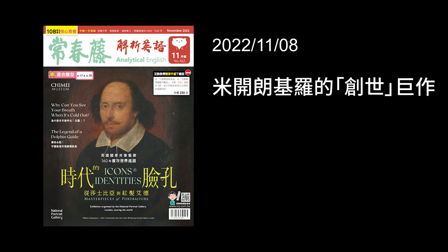Our second paragraph begins with: The renowned sculptor Michelangelo was initially tasked with just painting the twelve apostles onto the pendentives that support the ceiling of the Sistine Chapel in Rome. If you're tasked to do something, you are chosen but there's some requirement — it's something you really can't refuse to do; you've been given the job. The twelve apostles were the original followers of Jesus, and he was asked to paint them on the inside ceiling of the Sistine Chapel.